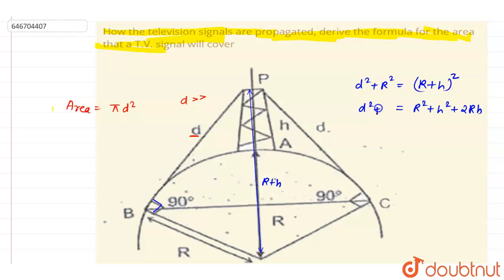It equals d² + R². So R² you can just cancel out, and this R is very, very large compared to this height of the tower, so you can just ignore h², and d² will be 2Rh.